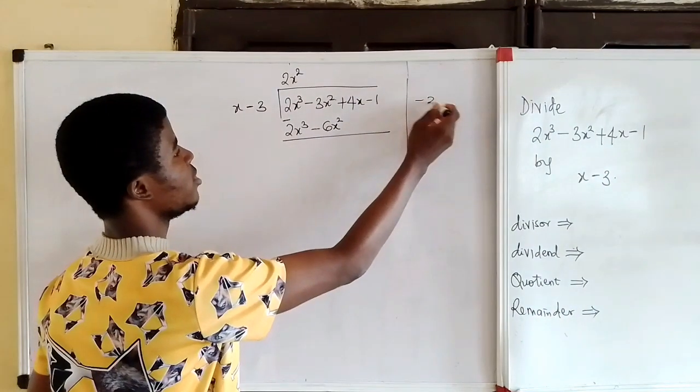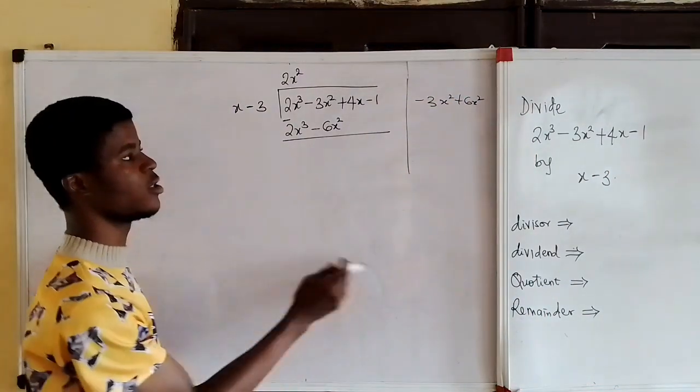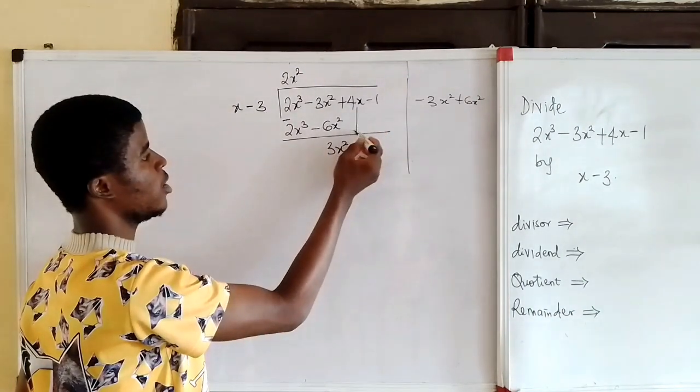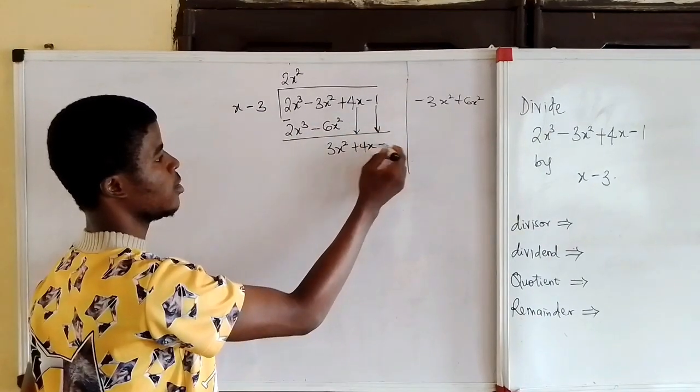So minus 3x squared plus 6x squared will give us 3x squared. Then 4x will come down, plus 4x, minus 1 will also come down, minus 1.